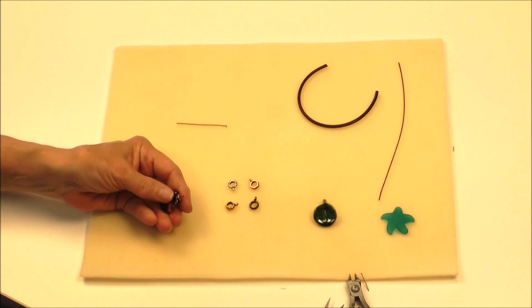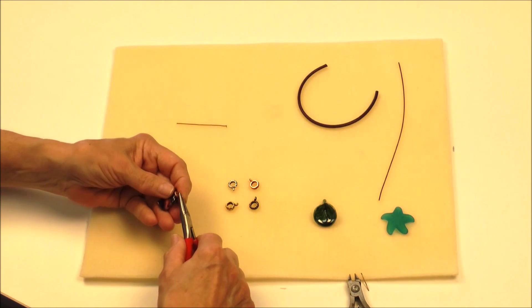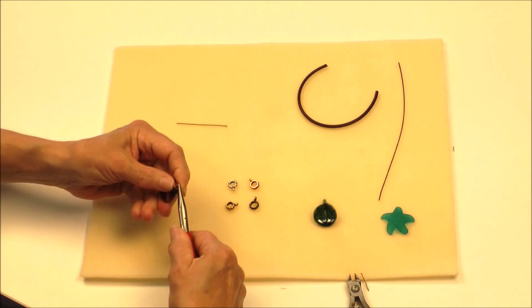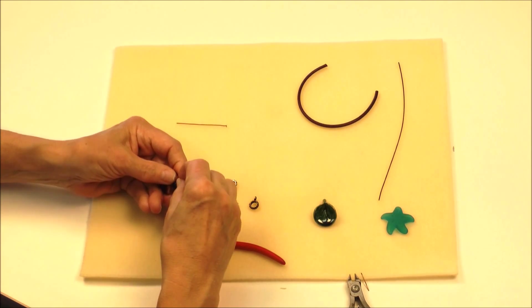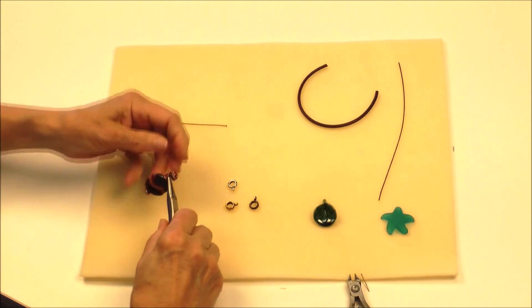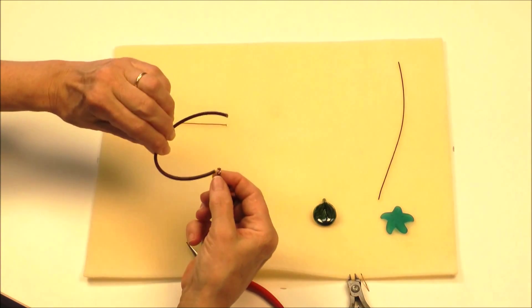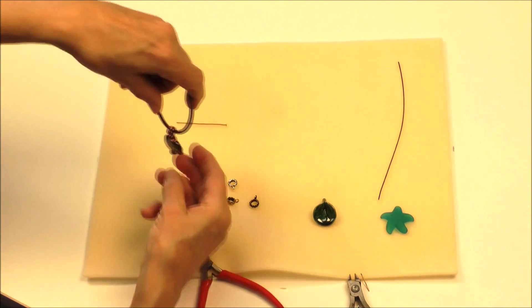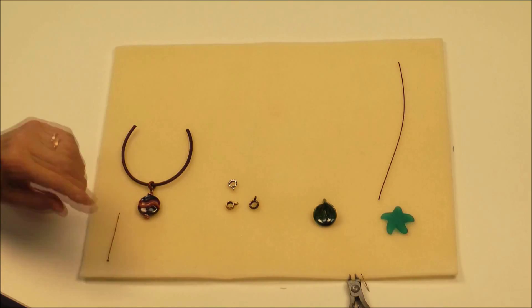If this is a new technique for you, you might want to take some time to review that video. So then I'll have some chain nose pliers. I will open up the loop I just made, attach the bale and then close that loop up again. And then I have a bale that is ready to string on a piece of leather or chain. And that's our very easiest technique.